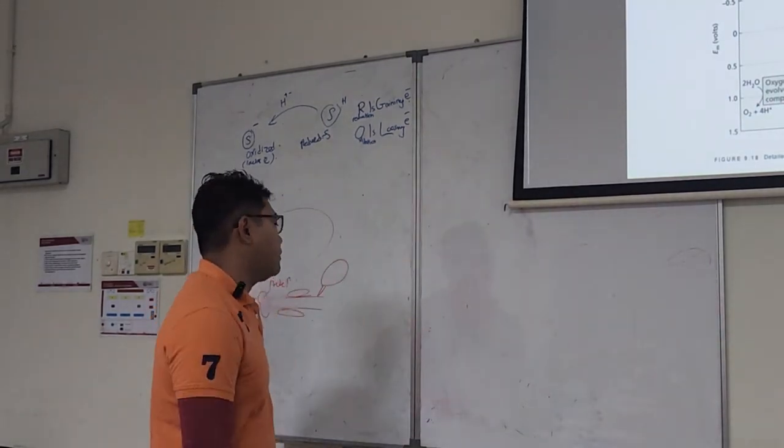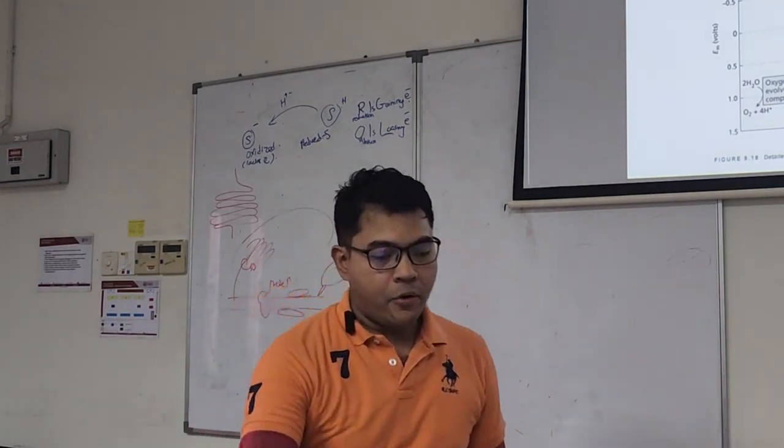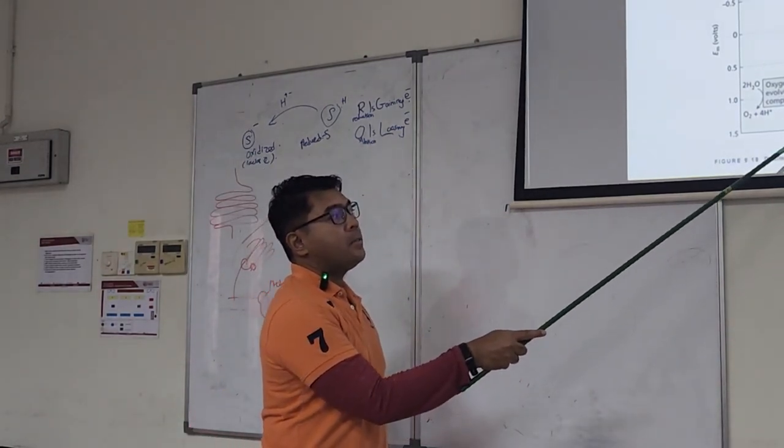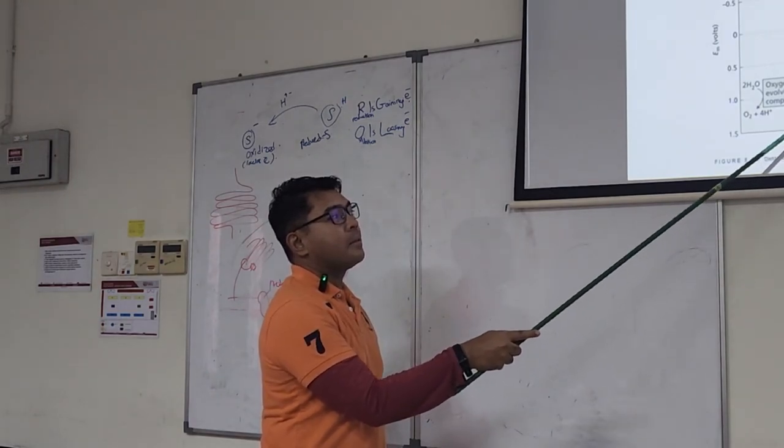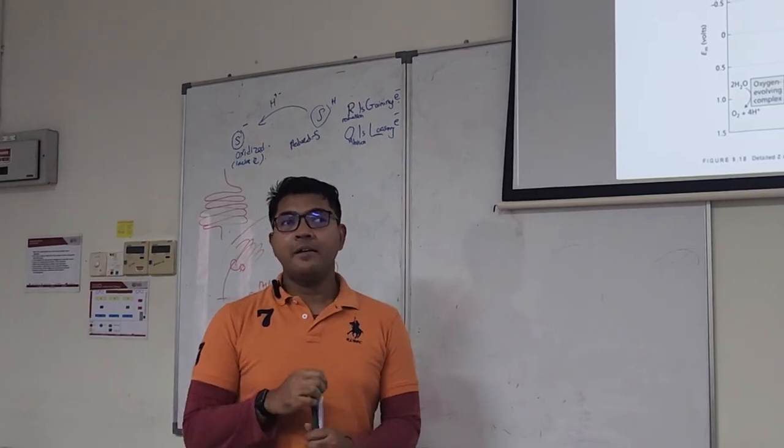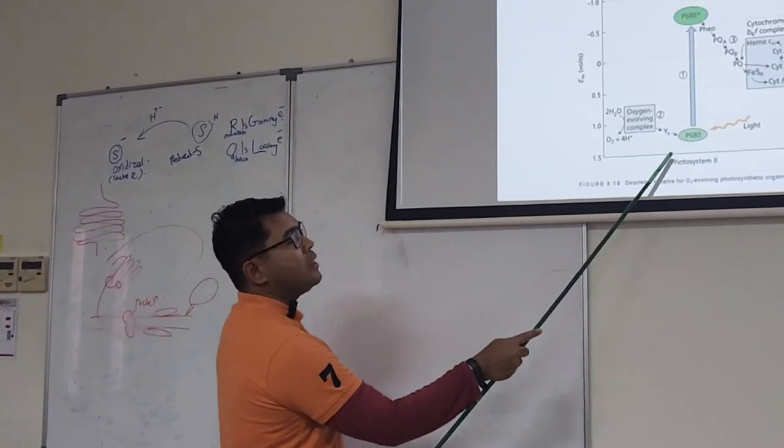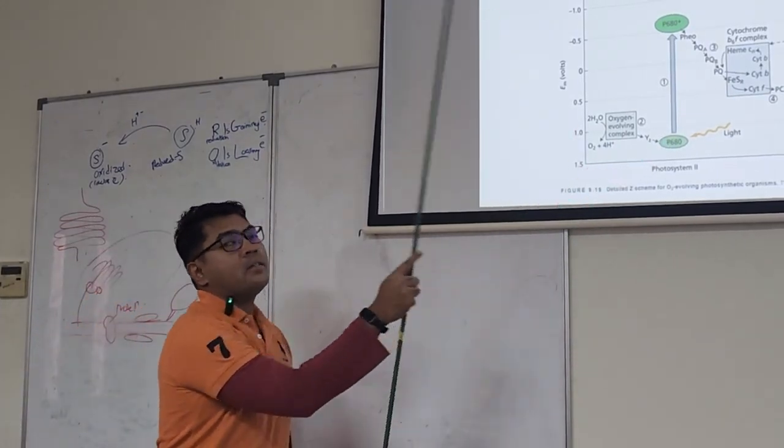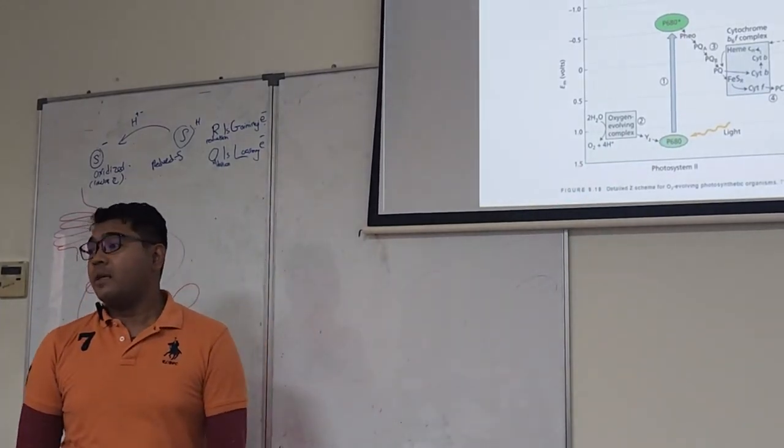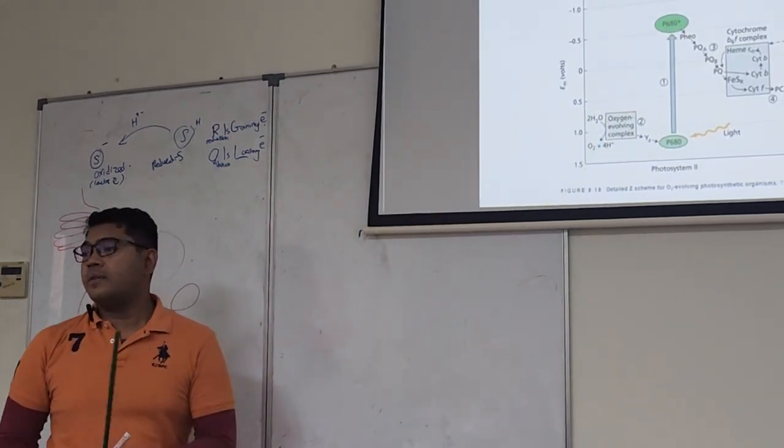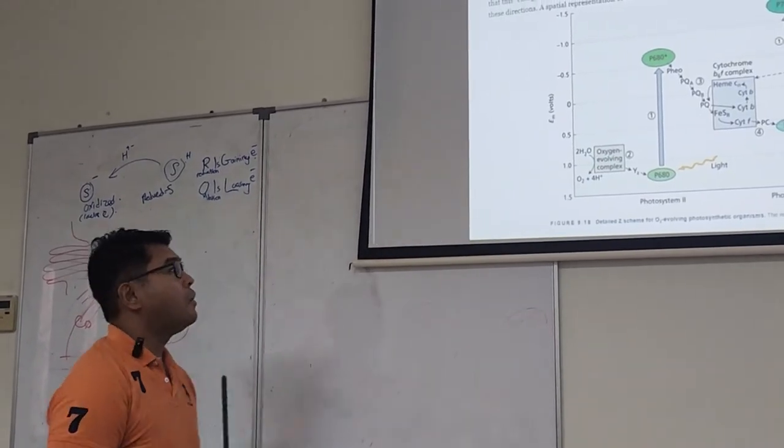Okay. The Z scheme. Meaning that the electron - remember, you have learned. It's a different way to say this. Ground state reaction center, P680. Excited state reaction center, P680 star.